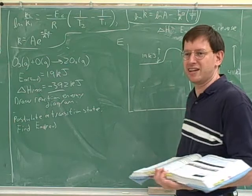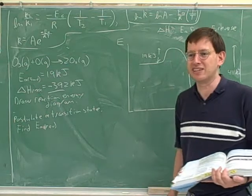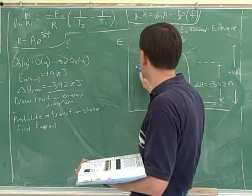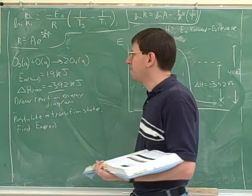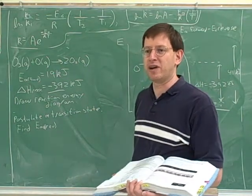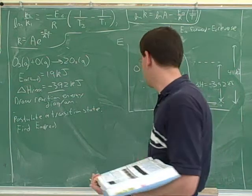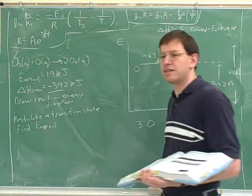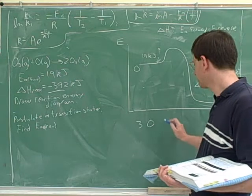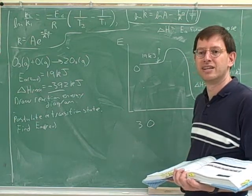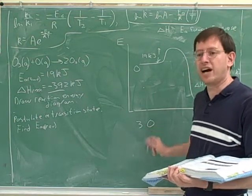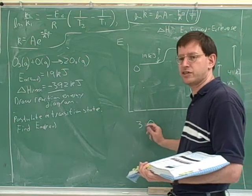Maybe the hard part here was postulating the transition state. Over here we have O3 and oxygen. Maybe the best thing to do is draw the Lewis diagram for O3, if you remember how to do that from last semester. How many valence electrons does a free oxygen have? Six — oxygen is in the sixth column of your periodic table, so it has six. So three of them would have 18 total.